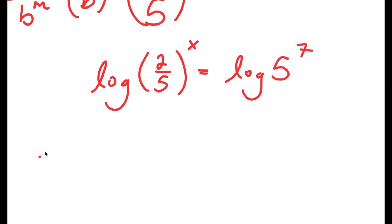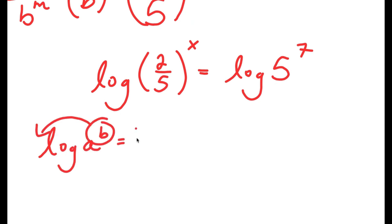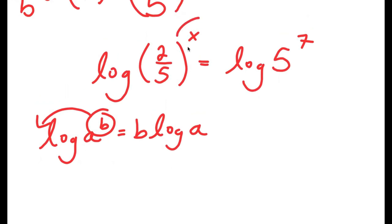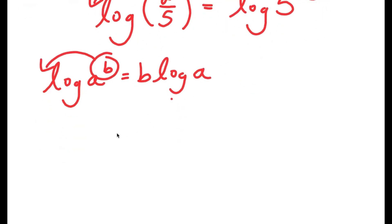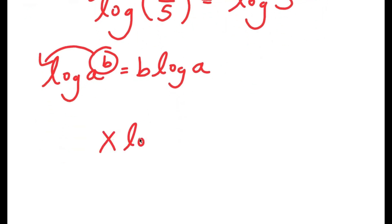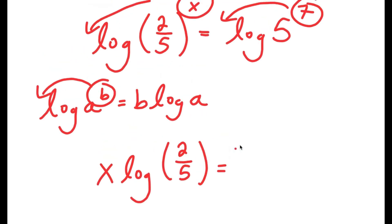From here, I'm going to take the log on both sides. So I get log of 2 over 5 to the power of x is equal to log of 5 to the power of 7. And if I have something in the form log a to the power of b, I can move the exponent b to the front to get b times log a. So I can move x to the front on the left and 7 to the front on the right.